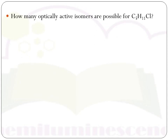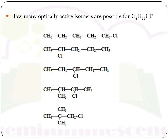The next question: how many optically active isomers are possible for C5H11OCl? The molecular formula is given and we have to find optically active isomers — not just any isomers. This formula can form many isomers, but we need to find the optically active ones. Those compounds which contain a chiral carbon atom — chiral compounds — are optically active. First, we draw all possible isomers of this molecular formula.